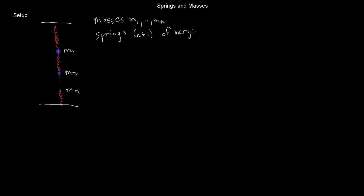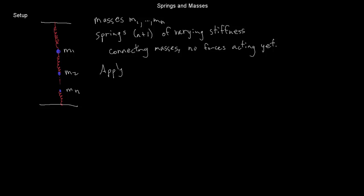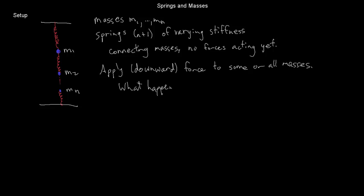So one of them could be a slinky, while another one could be an industrial-strength steel spring. Those springs are connecting all the masses. I said this would be on some kind of space station — don't assume that gravity is acting just yet. When you apply a force, let's say positive forces are downward in this picture. You could apply a force to just mass m1, or masses m2 and m3, or all of the masses.